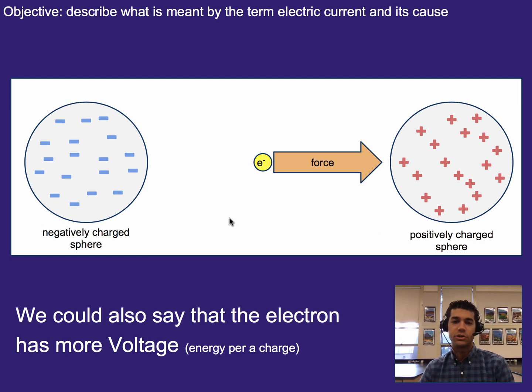We could also say that the electron has more voltage. So I set all this up to build us up to this idea of what is voltage. Well, it's the energy per charge. When we have more voltage, that means there is more kind of pressure or push on an electron from either a negatively charged area or a positively charged area, and as a result, it has more energy stored.